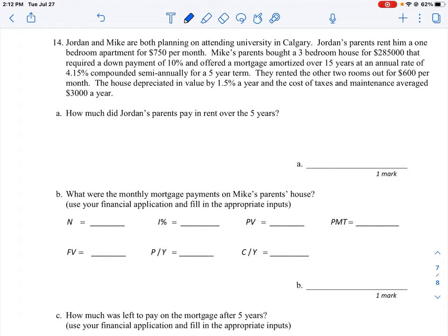Question A asks how much did Jordan's parents pay in rent over the five years? Jordan is the person who's just renting an apartment for $750 a month. To do this calculation is very simple.